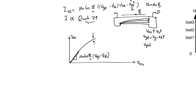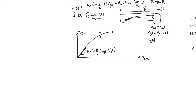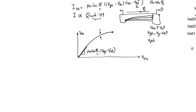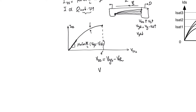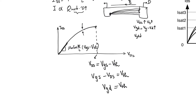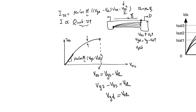The expression for current is an expression of a parabola, and every parabola has either a maximum or a minimum. In this case, the parabola has a maximum. We can obtain the value of V_DS at which the maximum occurs by differentiating the current and setting the derivative to zero. This gives us that the maximum occurs at V_DS equals V_gs minus V_threshold, which equivalently means V_gd equals V_threshold.